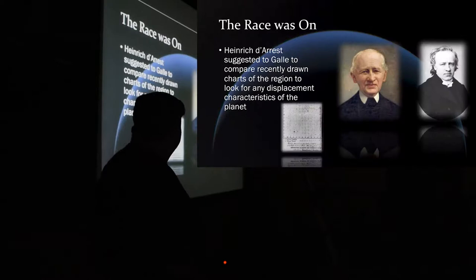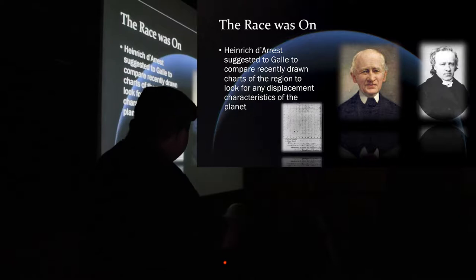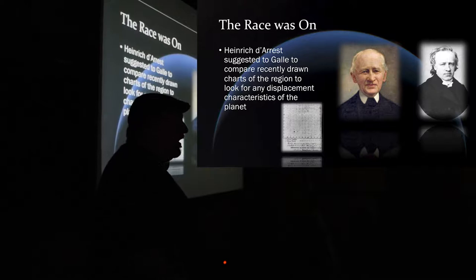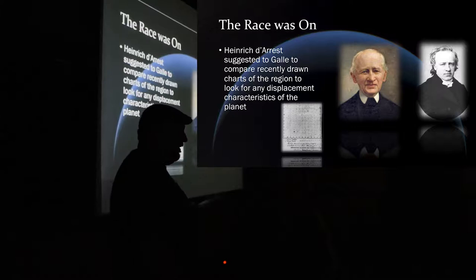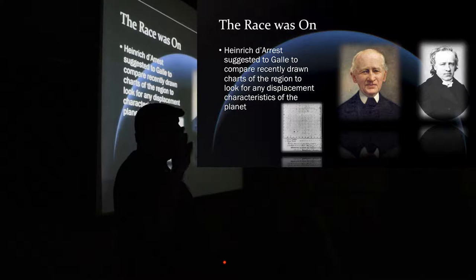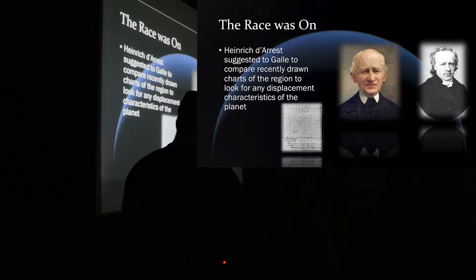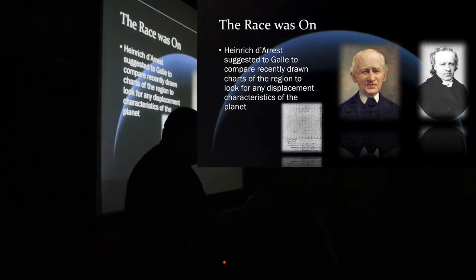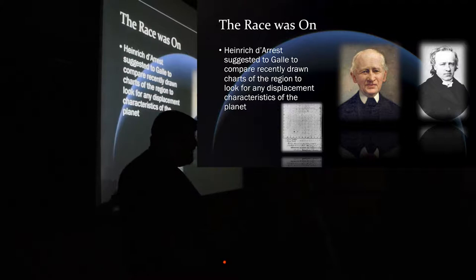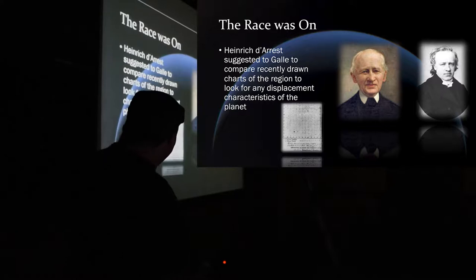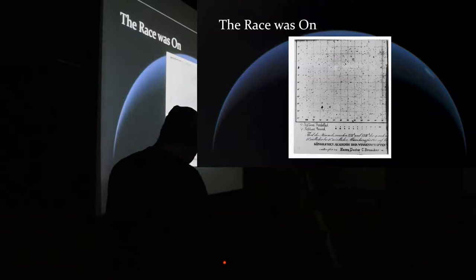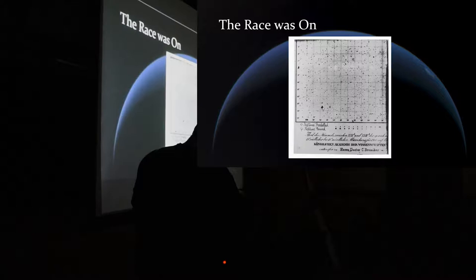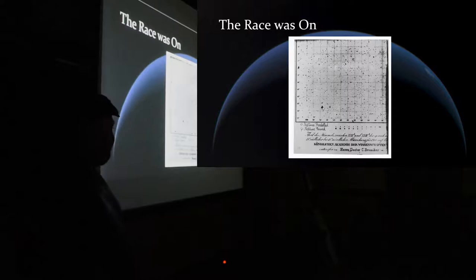So, Challis is in England looking for the planet, now there are astronomers in Berlin looking for the planet. But Berlin Observatory had an advantage. So, there was a student there by the name of Heinrich d'Arrest, and that's him right there. Berlin had some recently drawn star charts of that region where the prediction was going to be. The prediction was at the time between the constellations of Aquarius and Capricornus. They had a recently drawn star chart there and the student, d'Arrest, said, why don't we take the star charts, compare that to what we're seeing in the eyepiece and look for something that's different. And that's how they found it.